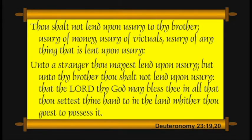Deuteronomy verse 19: 'Thou shalt not lend upon usury to thy brother — usury of money, usury of vittles, usury of anything lent upon usury.' We need to interpret this in light of Exodus 22 and Leviticus 25. The whole idea is that impoverished Israelites were protected from exploitation by their richer brethren by prohibiting interest on loans — among the brothers, like within the family. Interest could be extracted from a stranger or foreigner, because that presumes a business transaction. It's a different issue.